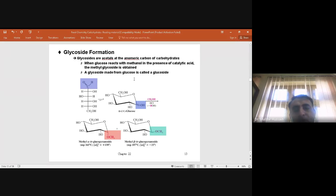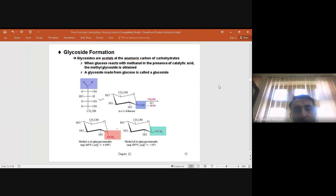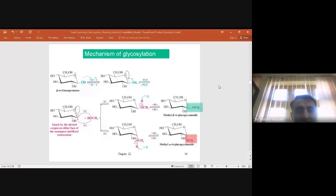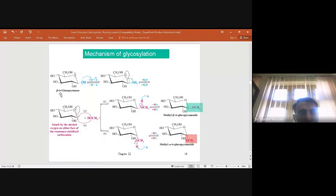A glycoside made from glucose is called a glucoside. This glycosidic linkage is created at the anomeric carbon. This is the simplest mechanism of glycosylation or glycoside formation in glucose.